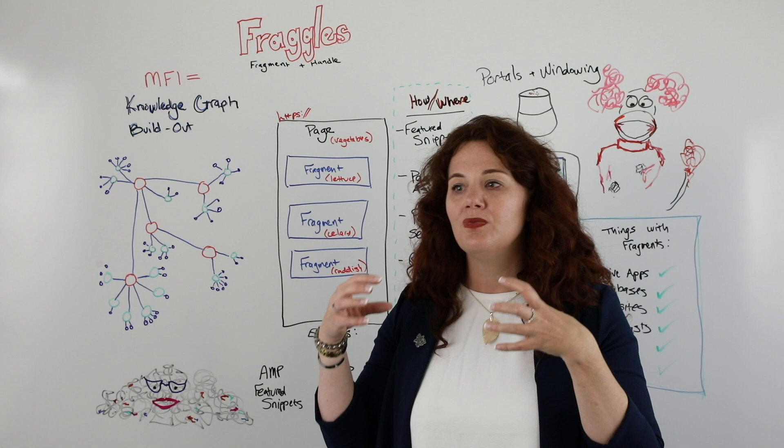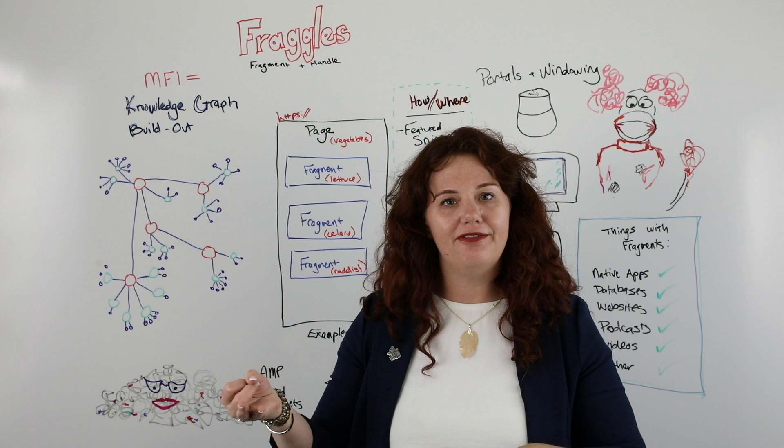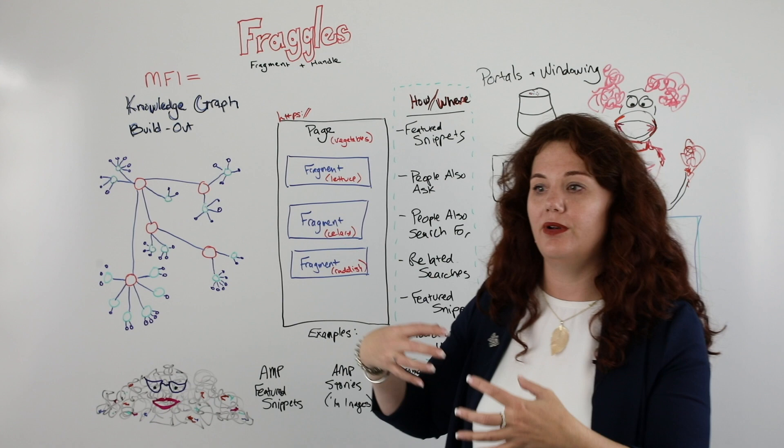If you think back to the AMA that John Mueller did right around the time knowledge graph was launching, he answered a lot of questions about JavaScript and hreflang. When you put this in that context, it makes more sense — he knows the entity understanding is really important, so hreflang is also really important. So that's enough of that.